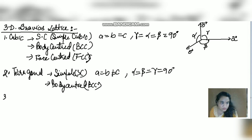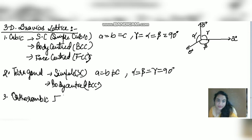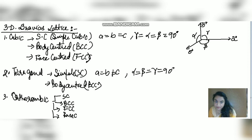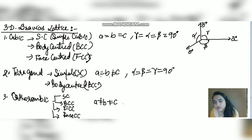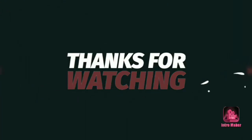The third 3D crystal system is orthorhombic. In orthorhombic, a ≠ b ≠ c, but all angles are equal to 90°. It includes simple, body-centered, face-centered, and base-centered variants — four Bravais lattice types within this system.